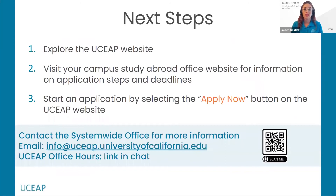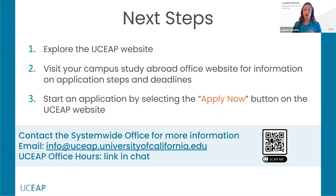We hope this presentation has provided you with a starting point on your journey to study abroad. We encourage you to explore the UCEAP website for detailed information about our programs, and visit your UC campus study abroad office for information on application steps and deadlines. Once you've determined which program you want, there's an apply now button on the UCEAP website. You can contact the systemwide office for more information — the general email is included on this slide. We are also holding office hours, so if you want to make an appointment for a one-on-one with an advisor, the QR code for that is on this slide and will be put in the chat as well.